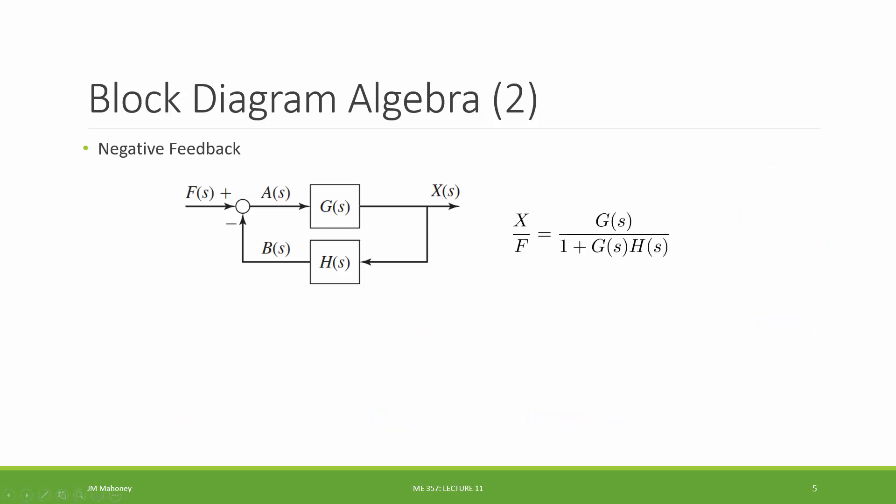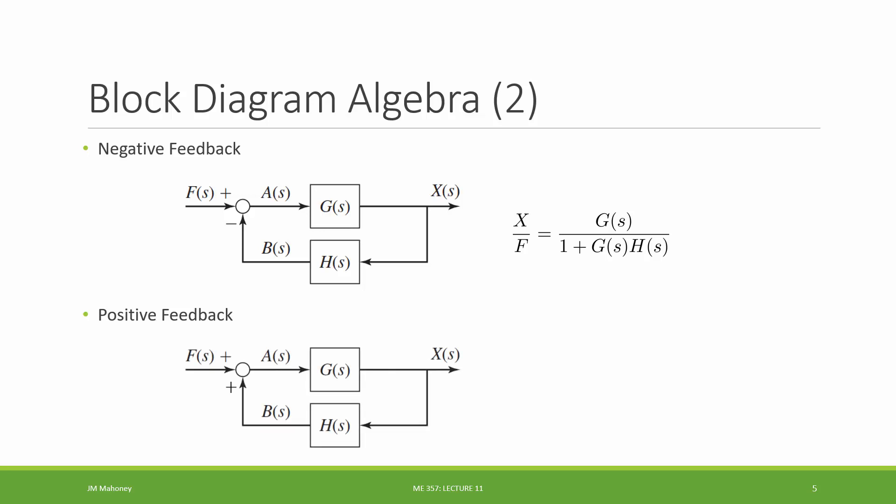The net transfer function for the negative feedback loop is G over (1 plus G·H). Most of the time in this course, we use negative feedback, where a equals f minus b, comparing the difference between the reference signal and the feedback signal. There are also positive feedback systems, but negative feedback loops are generally self-controlling — they reach an equilibrium or steady state — whereas positive feedback systems often go to positive or negative infinity over time.